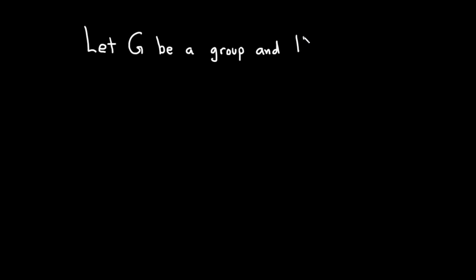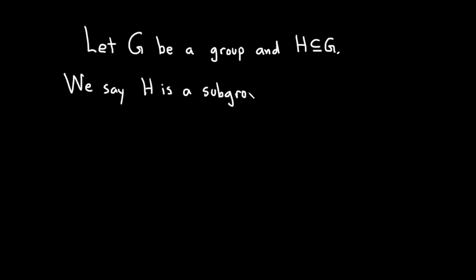So let's start by looking at a group which we'll call G. Let G be a group, and we're going to let H be a subset of G. Then H is actually a subgroup of G if it's also a group under the same operation as G. However, in practice, it's easier to use some defined criteria that we can follow in order to do the proofs, and I'm going to give you that criteria here. We say H is a subgroup of G if the following conditions hold.